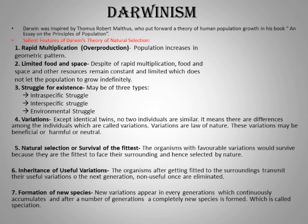The second proposition is limited food and space. Despite rapid multiplication, food, space, and other resources remain constant — they grow arithmetically, not geometrically. For example, 2×2×2×2 = 16 (geometric) versus 2+2+2+2 = 8 (arithmetic). Space in the universe is always constant, and the ultimate source of food for plants and animals also remains constant. Therefore, the carrying capacity of the environment does not allow indefinite population growth.